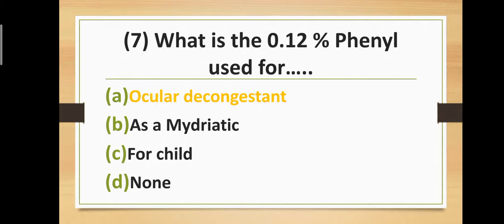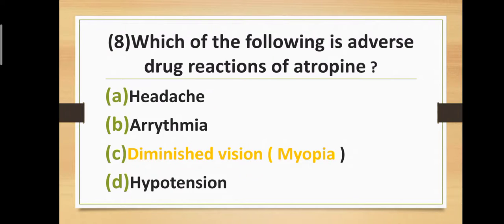Question seven: What is 0.12% phenylephrine used for? Option A: Ocular decongestant. Option B: As a mydriatic. Option C: For child use. Option D: None. Correct answer is Option A — Ocular decongestant. 0.12% phenylephrine is used as an ocular decongestant.